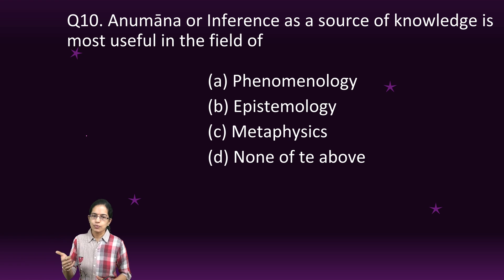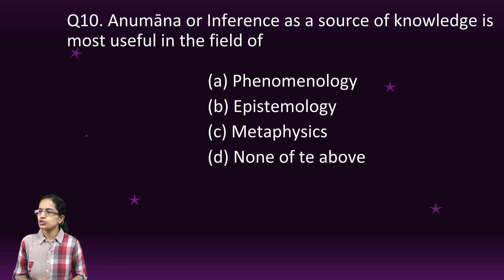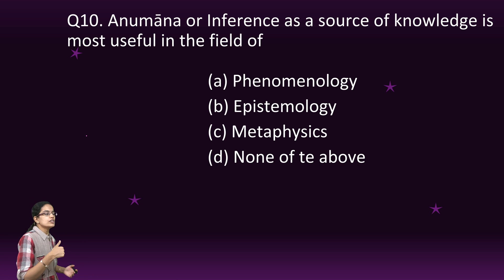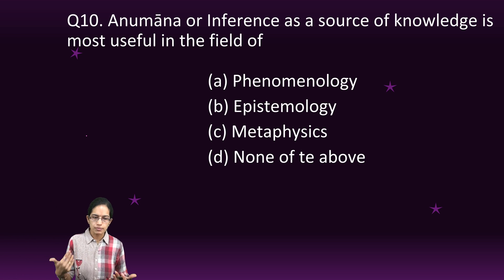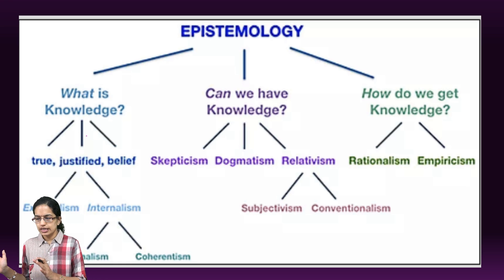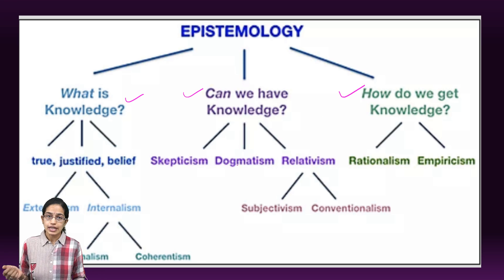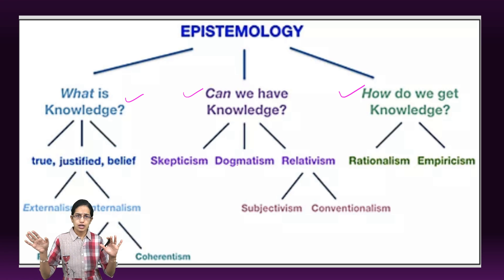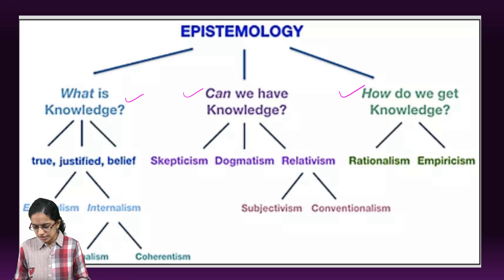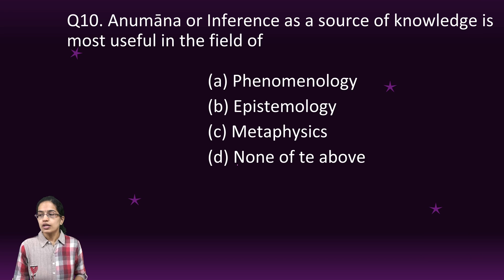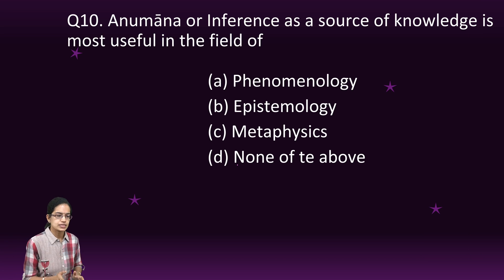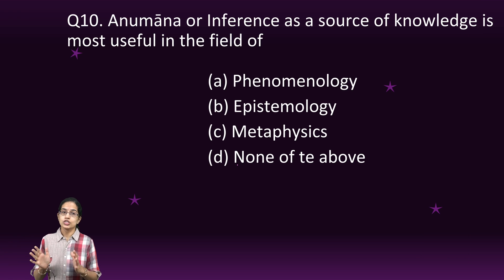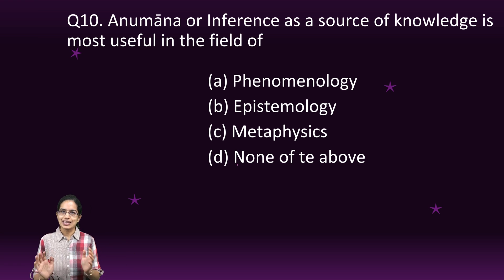Finally, an important question from the Indian logic section: Anuman or inference as a source of knowledge is most useful in the field of epistemology. Epistemology — covered in detail in a separate lecture — deals with understanding what is knowledge, whether we can have knowledge, and how we get knowledge. Therefore Anuman is useful in the field of epistemology. We have covered epistemology, ontology, and phenomenology in detail in a separate lecture, so just go back and check that for more details.